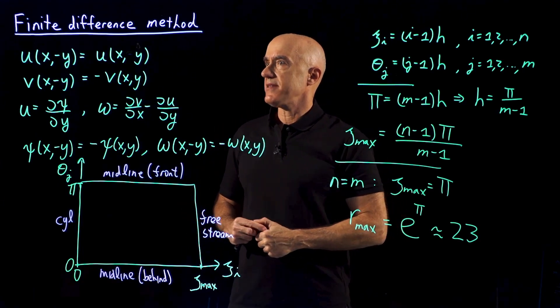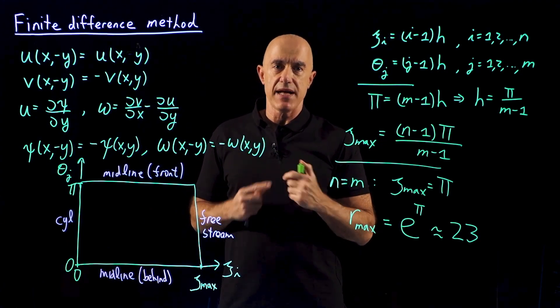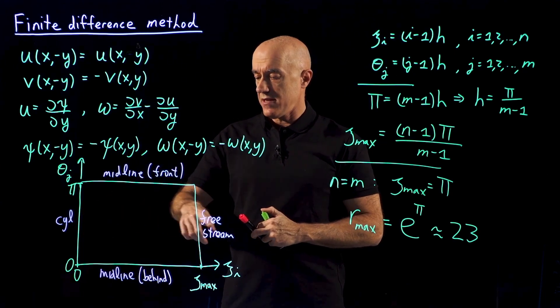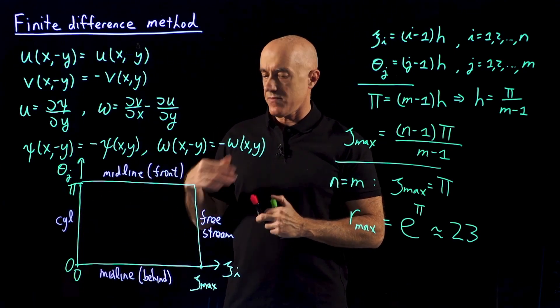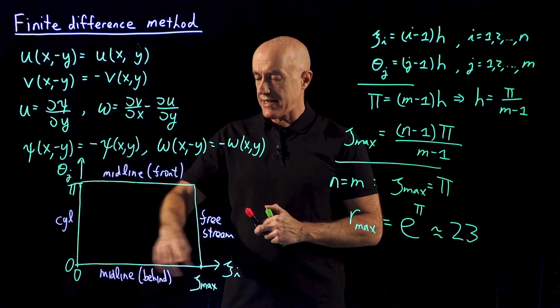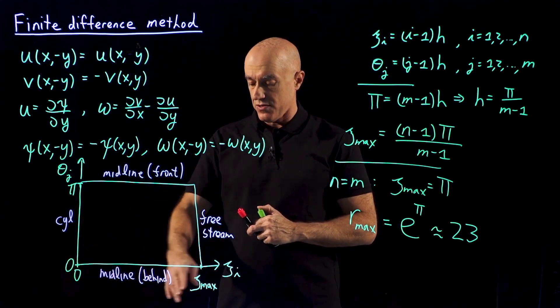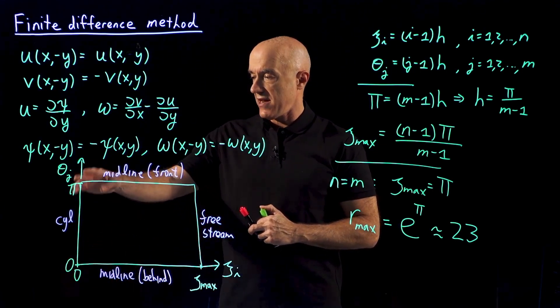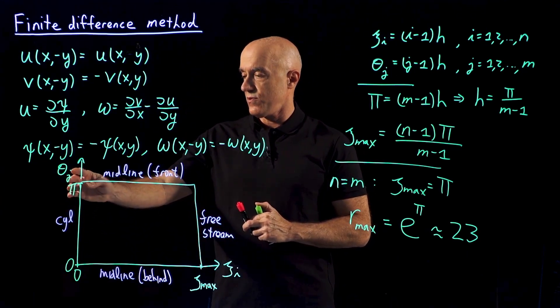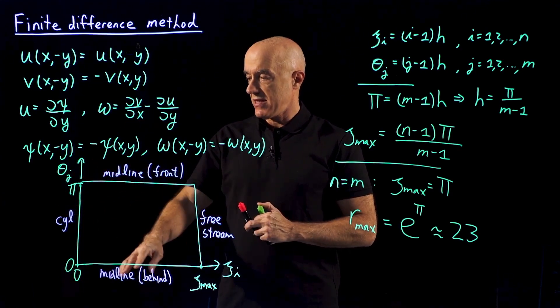So let me summarize. We need to set up a finite difference method. A finite difference method depends on a grid. So we set up a grid in our coordinate system, the log polar coordinate system. Our grid is a rectangle without any holes. The ξ value goes from 0 to ξ_max. The θ value is just the top half of the domain, goes from 0 to π.